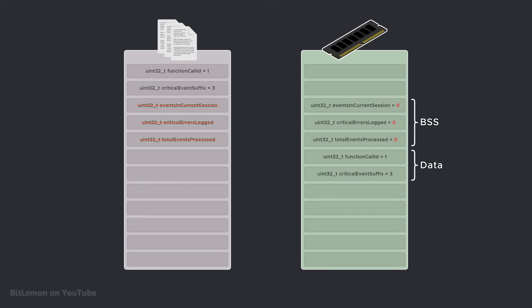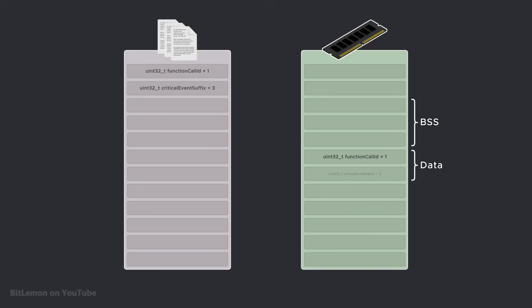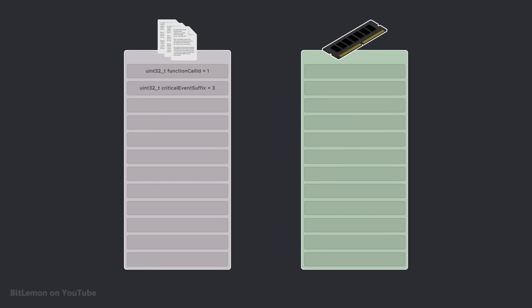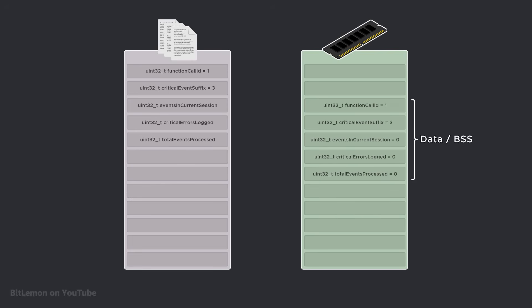The program also loads faster because, while initialized variables need to be loaded from the executable file into the data segment in memory, uninitialized variables don't. The BSS segment can simply be allocated and batch initialized with zeros. Mixing these two regions would force all static and global variables to be loaded from the executable file, which would take longer.